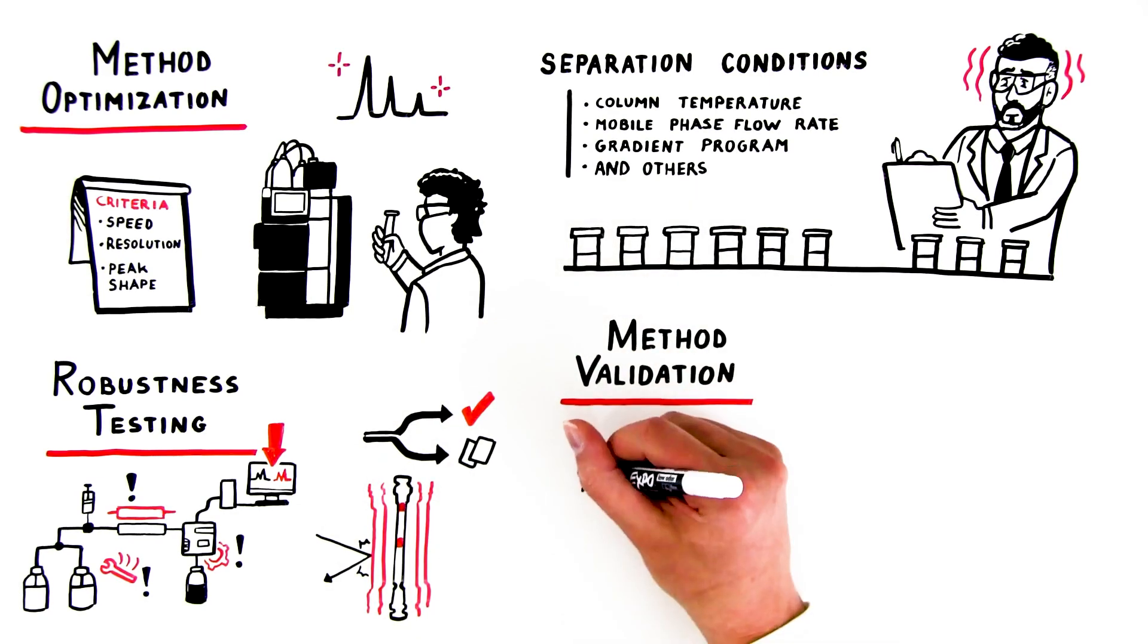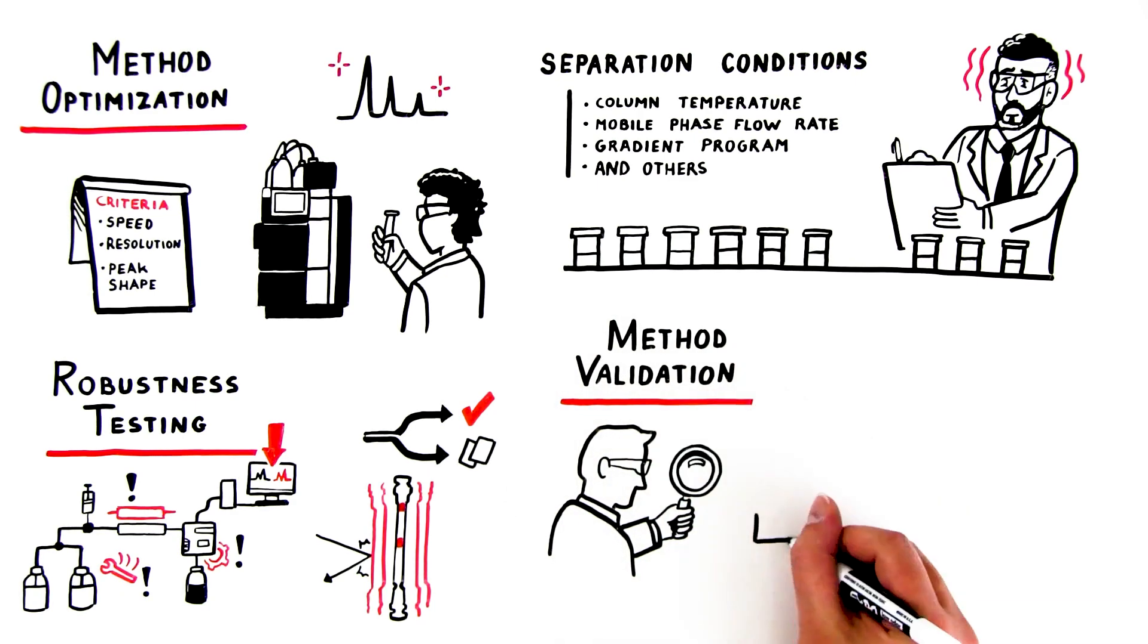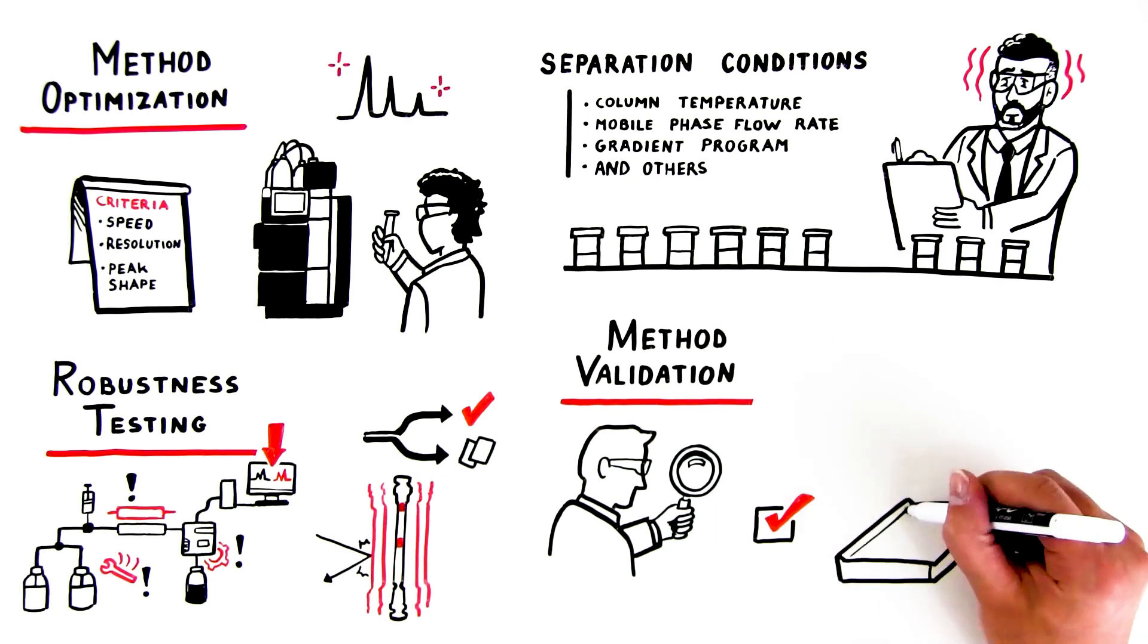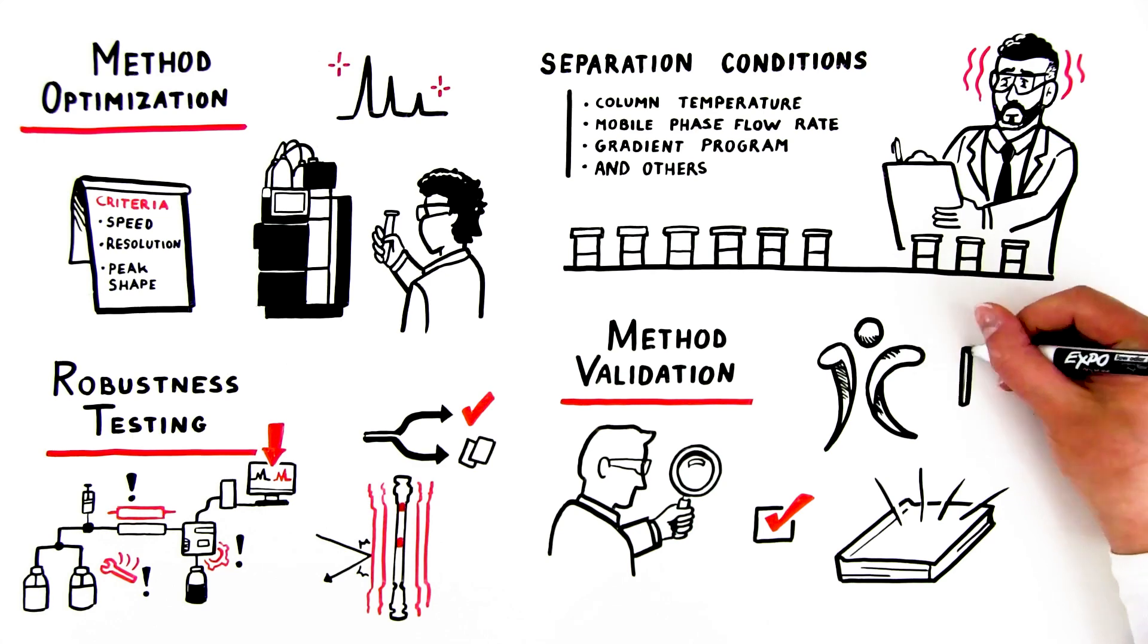Finally, there's method validation. This is an industry-specific process for determining whether a method is fit for purpose based on guidelines from regulatory bodies, such as the International Council for Harmonization of Technical Requirements for Pharmaceuticals for Human Use, ICH.